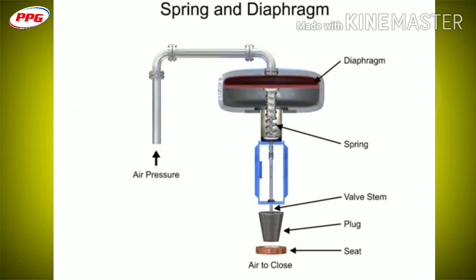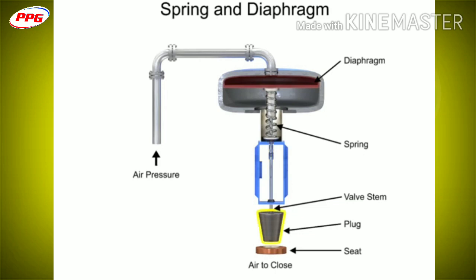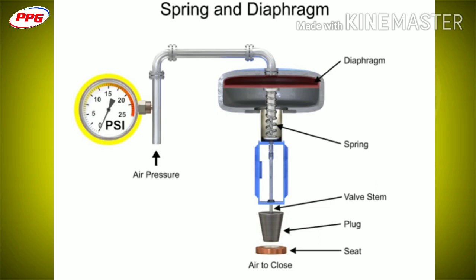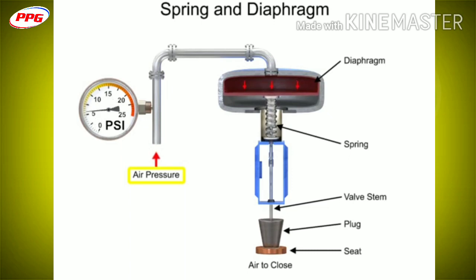The spring and diaphragm actuator uses a spring and a diaphragm to move the valve stem and plug. A 15 PSI pneumatic signal enters the housing at the top of the actuator. As pressure is exerted on the diaphragm, a downward force is applied against the spring which moves the restrictor.